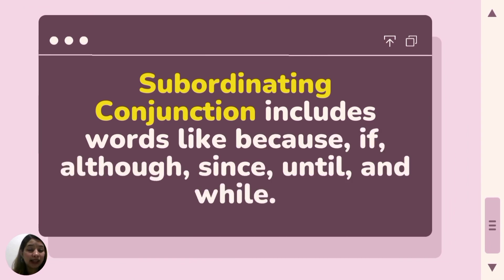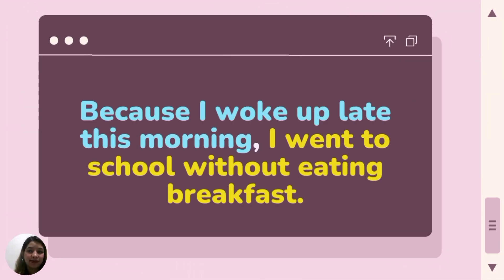Next is a subordinating conjunction, which includes words like because, if, although, since, until, and while. A subordinating conjunction is used to introduce a dependent clause. For example: 'Because I woke up late this morning, I went to school without eating breakfast.' 'I woke up late this morning' is an independent clause, but the subordinating conjunction 'because' turns it into a dependent clause. 'Because I woke up late this morning' does not express a complete thought; it must be joined to an independent clause to form a grammatically correct sentence.